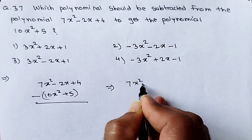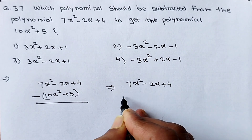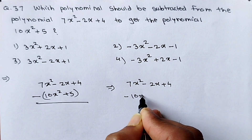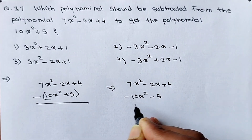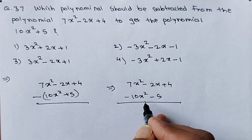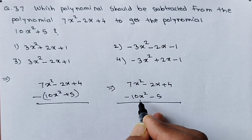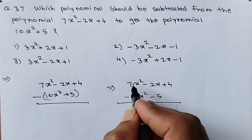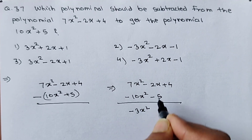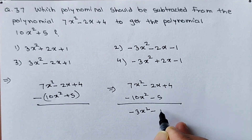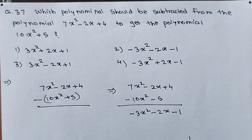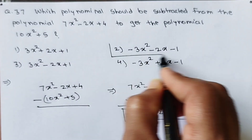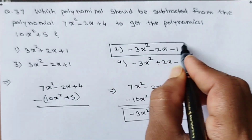So we get: 7x² minus 2x plus 4 minus 10x² minus 5. Taking subtraction of like terms: 7x² minus 10x² gives minus 3x²; there is no x term so minus 2x stays as is; and minus 5 plus 4 gives minus 1. So the required answer is minus 3x² minus 2x minus 1, which is option 2.